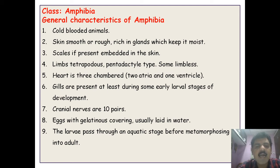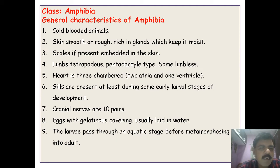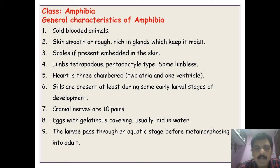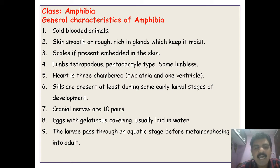The limbs are tetrapodous — 'tetra' means four and 'poda' means digits — meaning two forelimbs and two hind limbs are present. They are also pentadactyl: 'penta' means five and 'dactyl' means digits, so like human beings having five fingers, these animals have five digits.